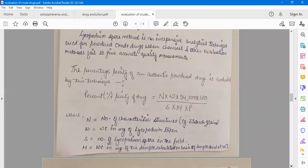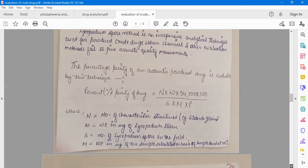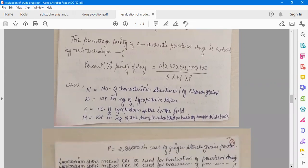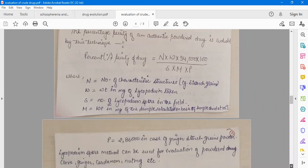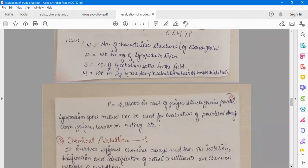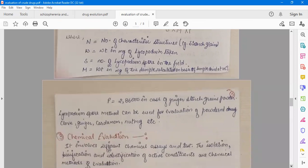The formula continues: into 100 upon S, where S is the number of lycopodium spores in the field. M is the weight in milligrams of the sample calculated on the basis of sample dried at 105 degrees Celsius. P is 286,000 in case of ginger starch grain powder. The lycopodium spore method can be used for evaluation of powdered clove, ginger, cardamom, nutmeg, etc.